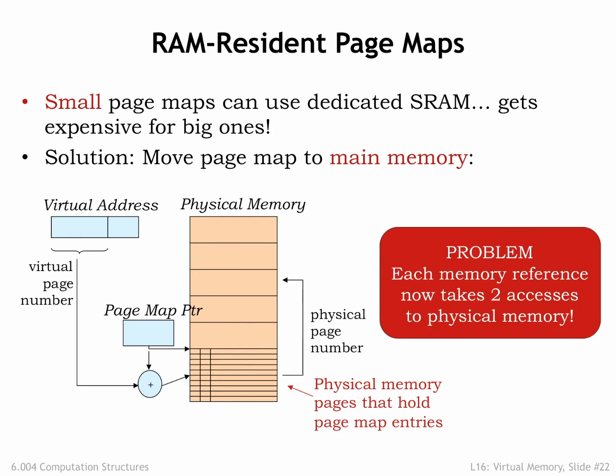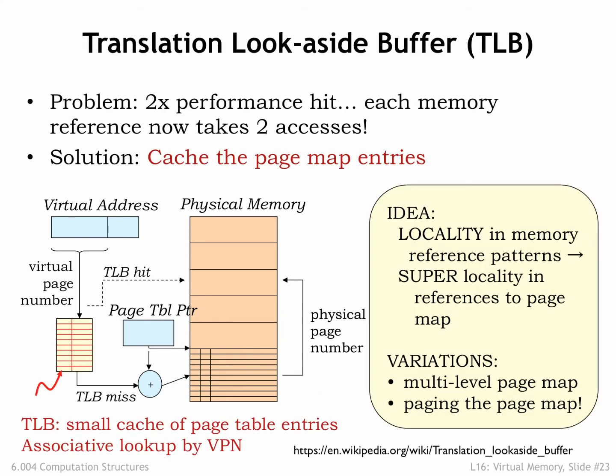The downside of this proposed implementation is that it now takes two accesses to physical memory to perform one virtual access — the first to retrieve the page table entry needed for the virtual to physical address translation, and the second to actually access the requested location. Once again, caches to the rescue!